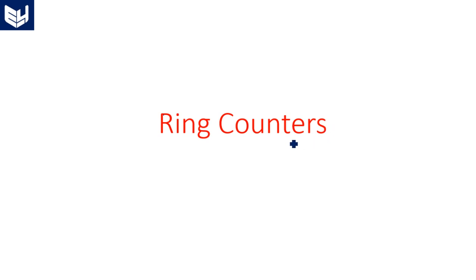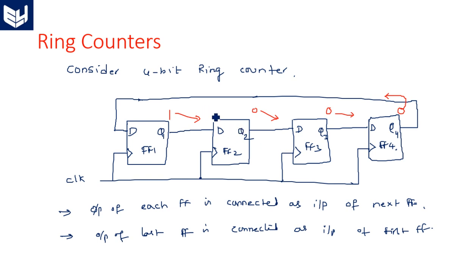In this video I'm going to explain the VHDL code for a ring counter. In the last video I started the ring counter explanation. We considered a 4-bit ring counter, meaning 4 flip-flops are connected in cascade. Ring counter comes under the category of synchronous counter, which is why a clock pulse is common for all the flip-flops.